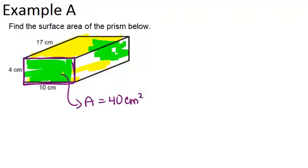Now let's look at this face off to the right side. It doesn't seem like its dimensions are labeled, but if we look carefully, we'll see that this must be 17 centimeters, because it's 17 over here, and this must be 4 centimeters, because it's 4 over there. So that means the area of this face is 17 times 4, or 68 centimeters squared.